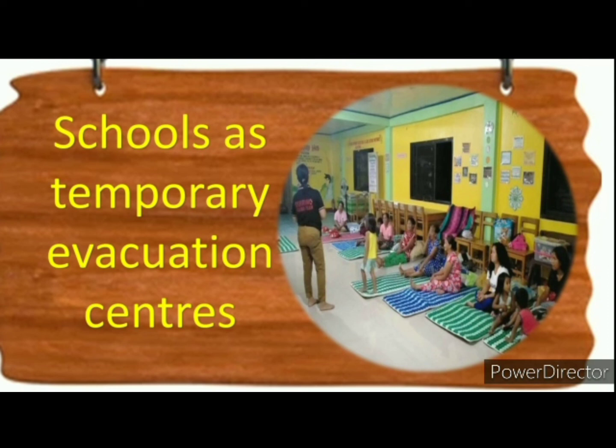Schools can offer protection from the elements, have water and sanitation facilities, offer classrooms and assembly areas recognized as child-friendly spaces, and are important institutional and community hubs. They have a high degree of visibility and familiarity for local communities, particularly elementary schools that are centers of a range of community activities. As a result, communities may also simply go to schools for shelter without direction from disaster management authorities.